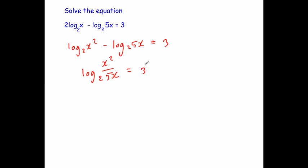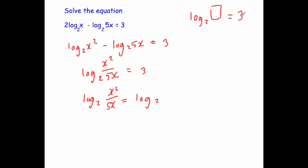Now convert the right-hand side into a log base 2. We want log base 2 of something to equal 3. Since 2 cubed is 8, log base 2 of 8 equals 3. So replace the 3 with log base 2 of 8. The equation becomes log base 2 of x squared over 5x equals log base 2 of 8.